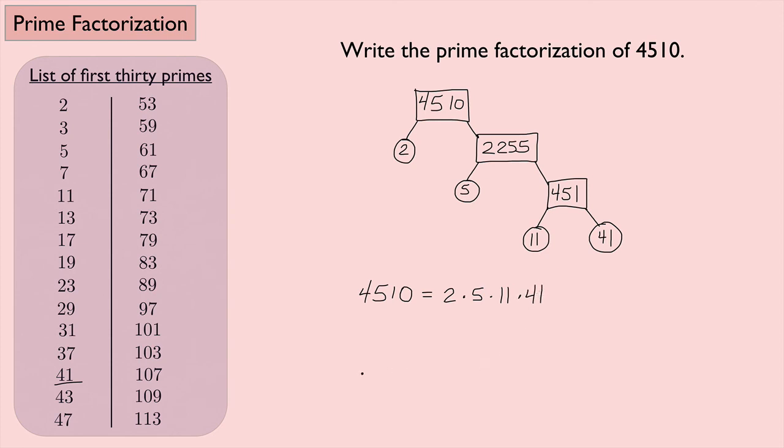So I can say that the prime factorization of 4510 is 2 times 5 times 11 times 41. Now, it turns out that the prime factorization of a number is unique, except for the order of the factors. What that means is there's only one way to do it. In other words, 4510 written as a product of prime numbers will always be a product of these four numbers right here. You can move the order around, but it will always be just these four numbers.